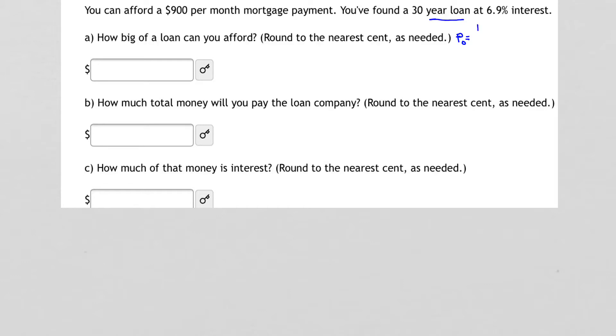We have from our formula sheet, P sub 0 equals D times the quantity 1 minus quantity 1 plus R over K raised to the minus NK, all divided by R over K. This is our loan formula, or also known as the payout annuity formula.